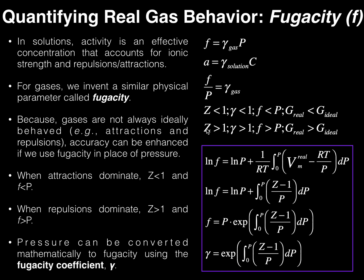When repulsions dominate, the compression factor z is greater than 1, the fugacity is greater than the pressure, and the fugacity coefficient is greater than 1. This makes sense because for the fugacity to be greater than the pressure, you'd have to multiply pressure by a number greater than 1, such as 1.1 or 1.2. Also, the real energy of the gas is greater than what we would calculate theoretically from ideal situations, because repulsions increase the force of collisions, creating a higher energy system.